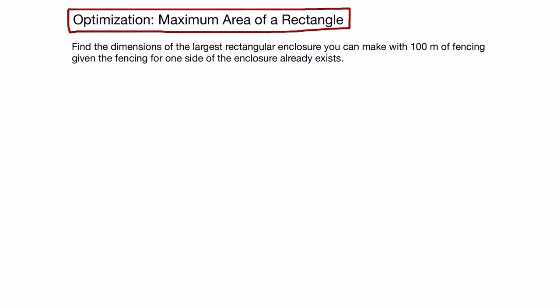Let's start by drawing a diagram to visualize it. We have one side of the enclosure already exists. So to make the rectangular enclosure, we only have to put in three other sides of fencing: one, two, three.